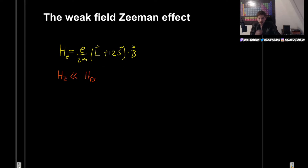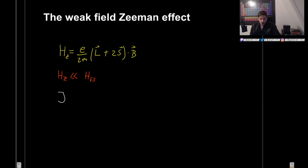This is the perturbation. We can base our states on the one used in the case of spin-orbit coupling, which also involved coupling with a magnetic field. Back then, instead of using L and S separately, we used J — the total angular momentum — which is L plus S.